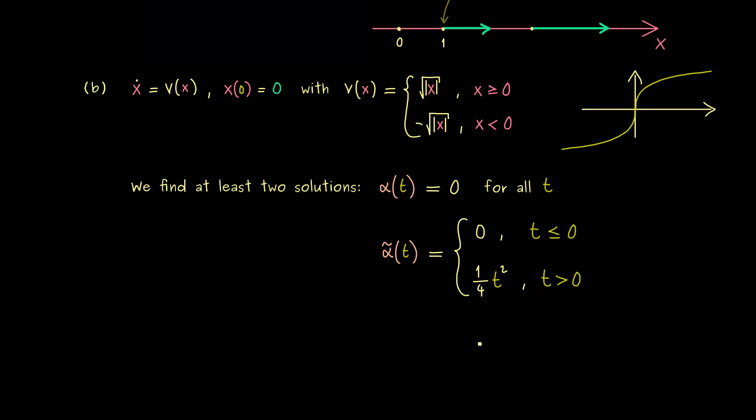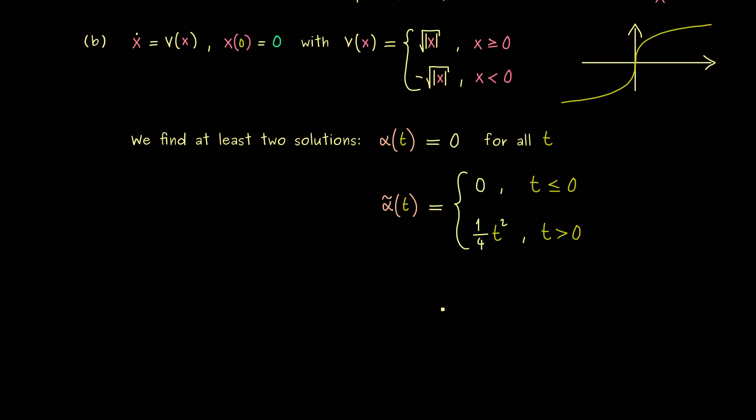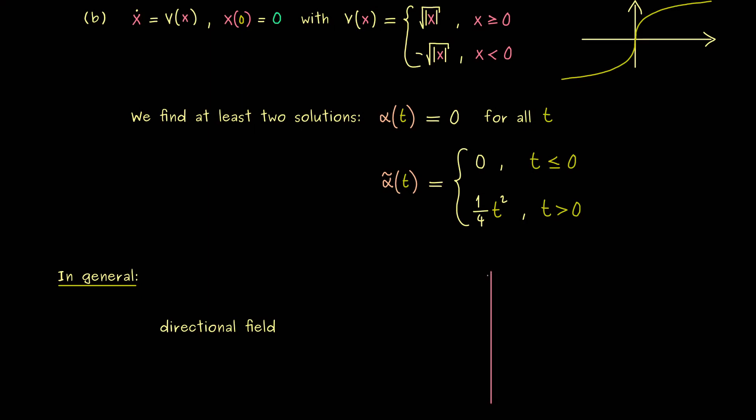So in summary, we can say we have two solutions that fulfill the initial value problem, and they are obviously not the same. And in fact, for our theory, it would be nice if we could exclude such strange behaviors. So in general, we want to have the existence and the uniqueness of a solution of a given initial value problem. This means the vector fields v have to be nice enough such that we have that. In other words, our directional field should get us these informations.